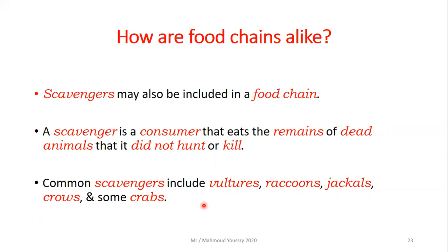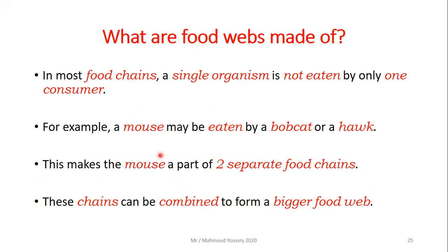Common scavengers include vultures, raccoons, jackals, crows, and some crabs. For example, imagine a lion that hunted a deer and started feeding on it — the lion is the carnivore. If the lion leaves some remains, another animal like a vulture or raccoon comes and eats those remains. In that case, the vulture and raccoon are scavengers because they are eating from a dead animal they didn't hunt or kill.